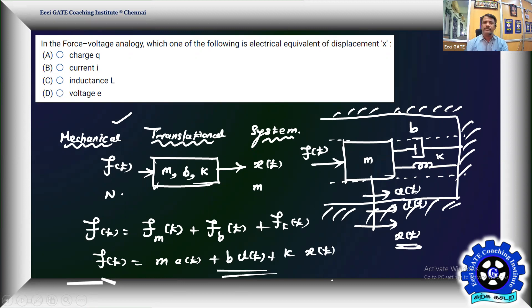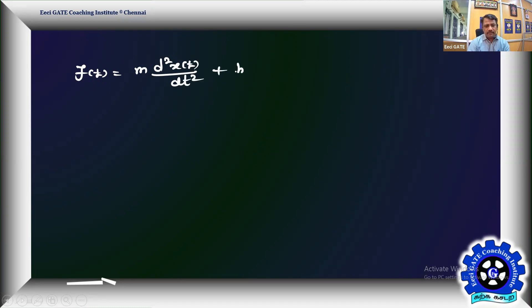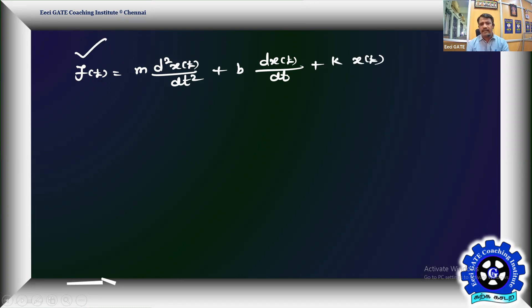This gives the basic second-order equation of a mass-spring-damper system: F(t) = M·(d²x(t)/dt²) + B·(dx/dt) + K·x(t). That is mass times acceleration, plus B times velocity in terms of displacement, plus K times displacement x(t). That's the equation governing this mass-spring-damper mechanical translational system.